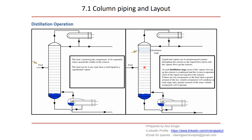This continuous counter-current process is the basis for separating all the components. If there are two components in the feed, the greater amount of the less volatile component will condense at each stage, while the greater amount of the more volatile component will evaporate and accumulate in the upper section of the column. This is the basic principle of a distillation column.